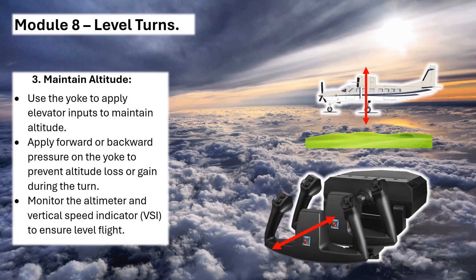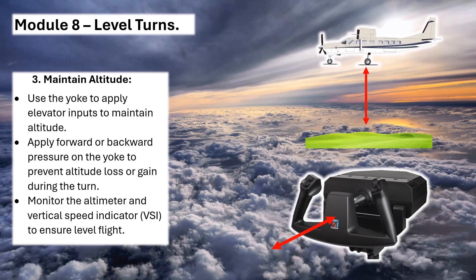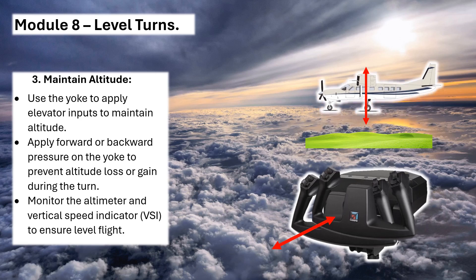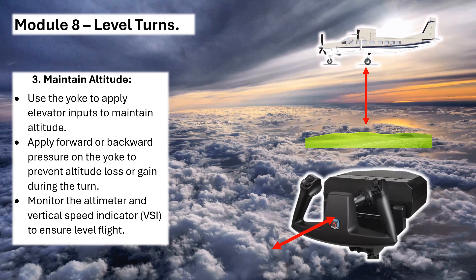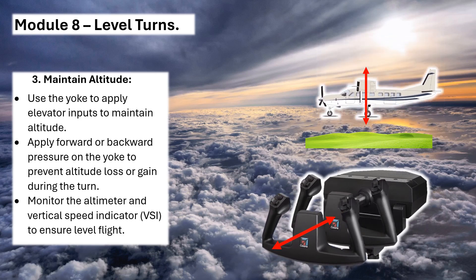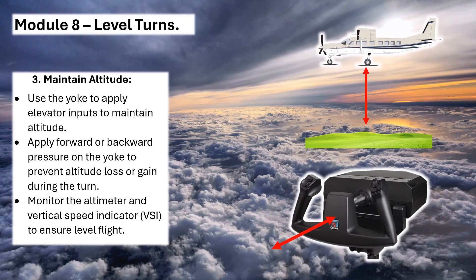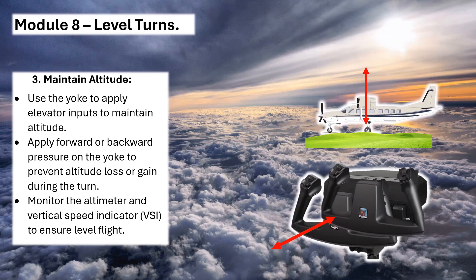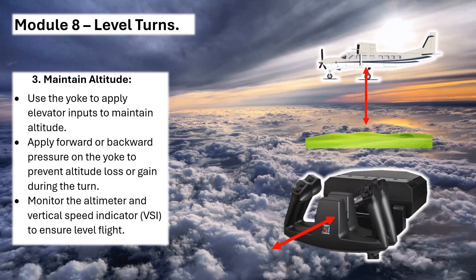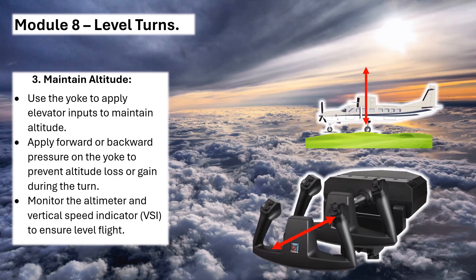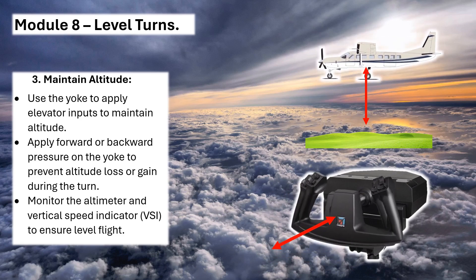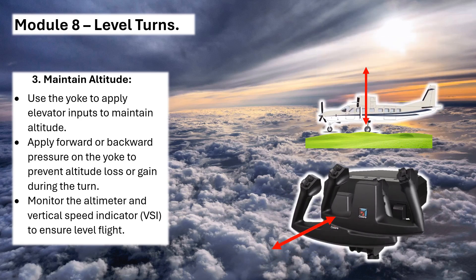3. Maintain altitude – use the yoke to apply elevator inputs to maintain altitude. Apply forward or backward pressure on the yoke to prevent altitude loss or gain during the turn. Monitor the altimeter and vertical speed indicator (VSI) to ensure level flight.